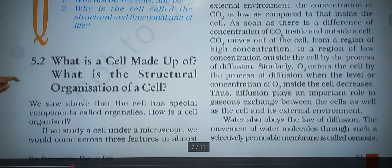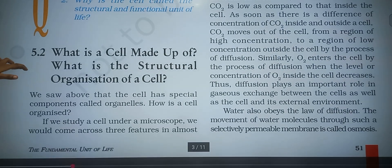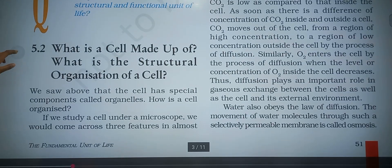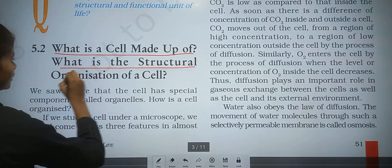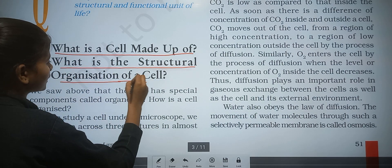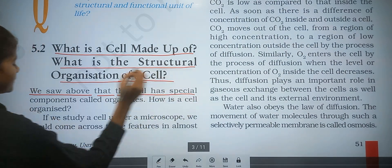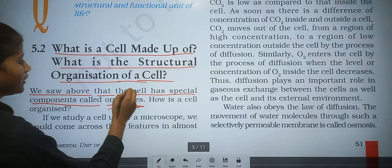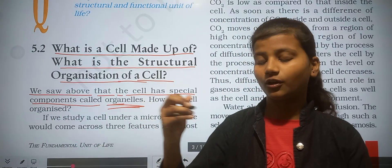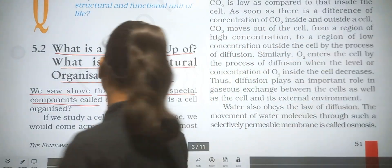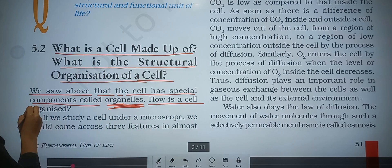So, what is a cell made up of? What is the structural organization of a cell? We saw above that the cell has special components called cell organelles. How is a cell organized?